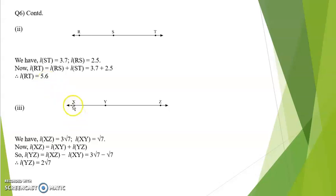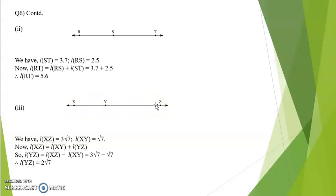And the last one. Length XZ is given as 3√7 and length XY is given as √7. We have to find YZ. We know that XZ is equal to XY plus YZ. Therefore YZ would be XZ minus XY, which is equal to 3√7 minus √7. The answer is 2√7.